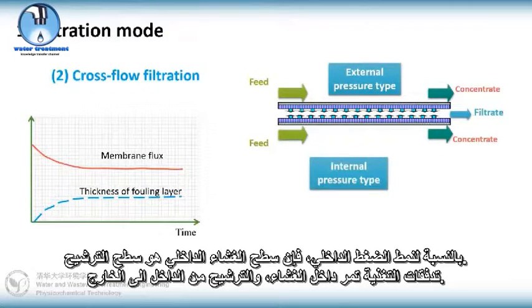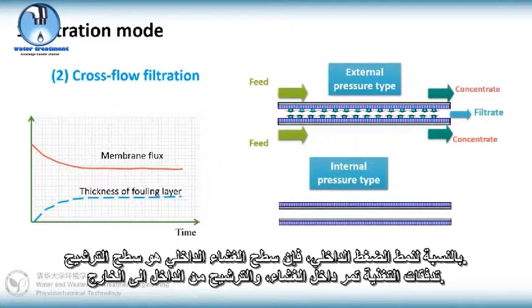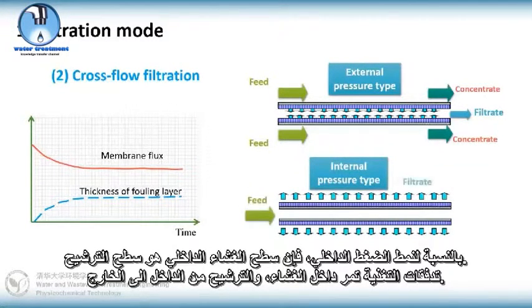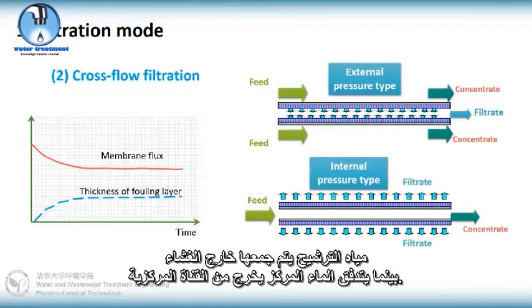For internal pressure type, the internal membrane surface is the filtration surface. The feed flows inside of the membrane and the filtration is from inside to outside. The filtrate is collected outside while concentrate flows out from the central channel.